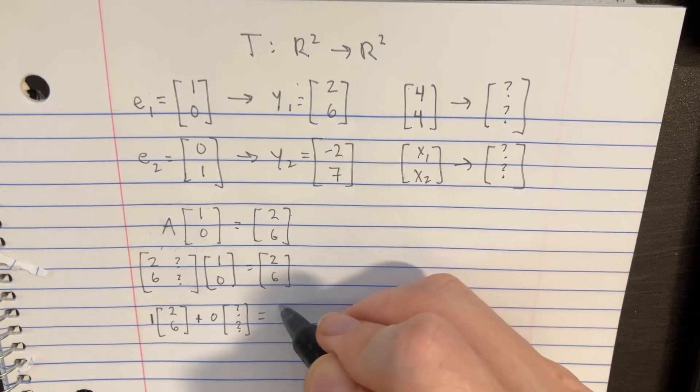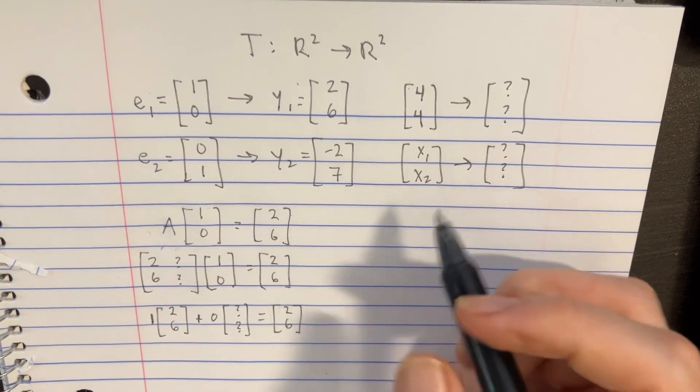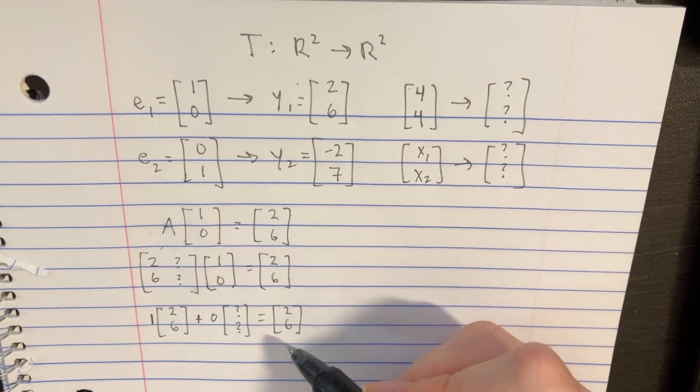it's just going to equal 0. So we're going to end up with the 2, 6 over here. And so we've figured out this half of A.